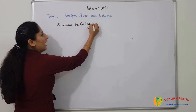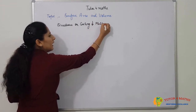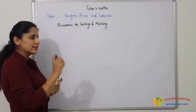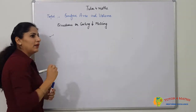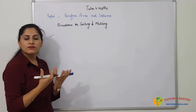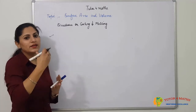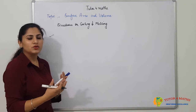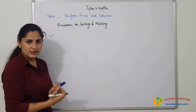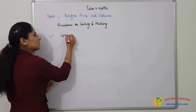Casting and melting type questions include problems like: we have a big spherical ball and it is recasted and melted to make small spherical balls of equal size. This is the first type — spherical ball questions.